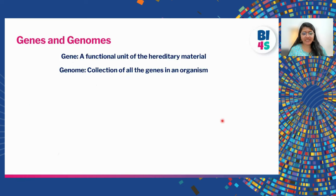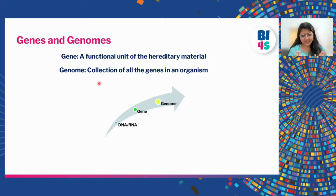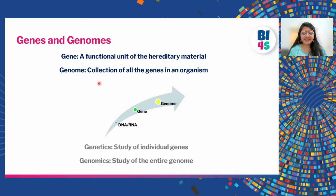A gene is a functional unit of the hereditary material — it is the smallest part of the hereditary material which has a role by itself. The genome is a collection of all the genes of the organism. So DNA and RNA together make a gene, and the collection of genes makes the genome. The study of individual genes we call genetics, and the study of the entire genome we call genomics.